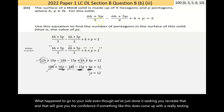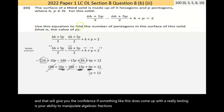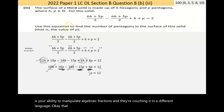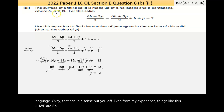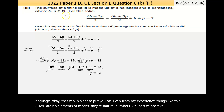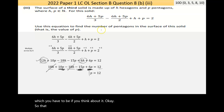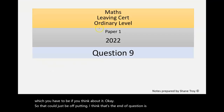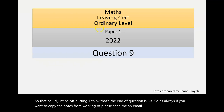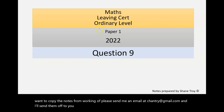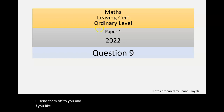H and P both being elements of ℕ means they're natural numbers — positive whole numbers — which makes sense for counting faces. That's the end of Question 8. As always, send me an email at shanetroy@gmail.com for the notes, and like and subscribe for more. See you on Question 9!